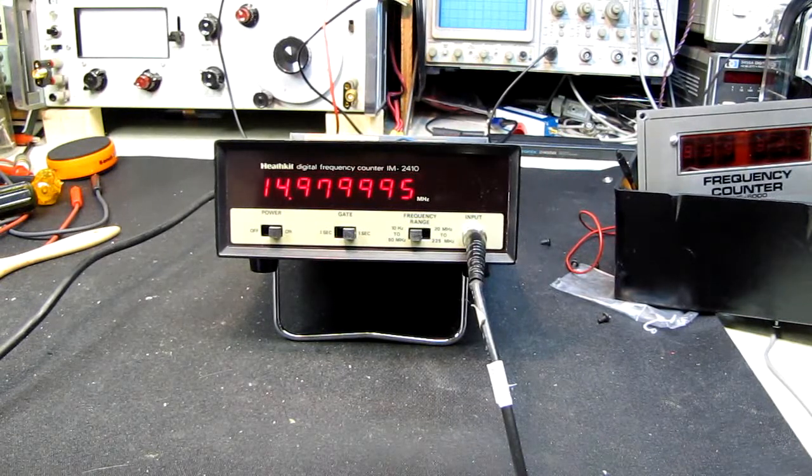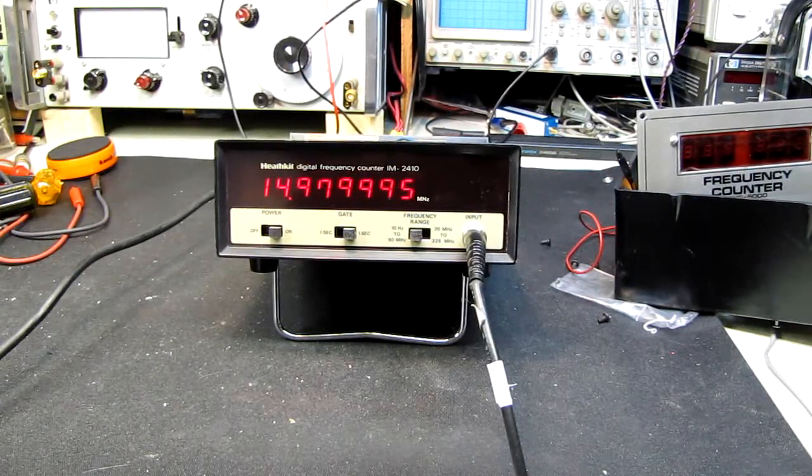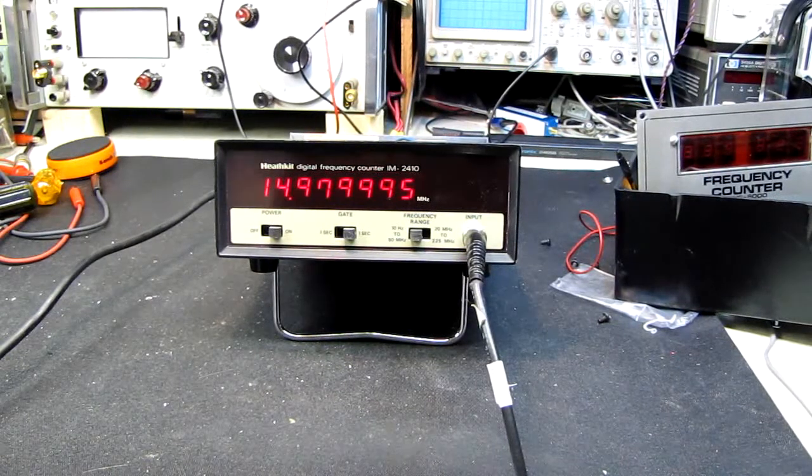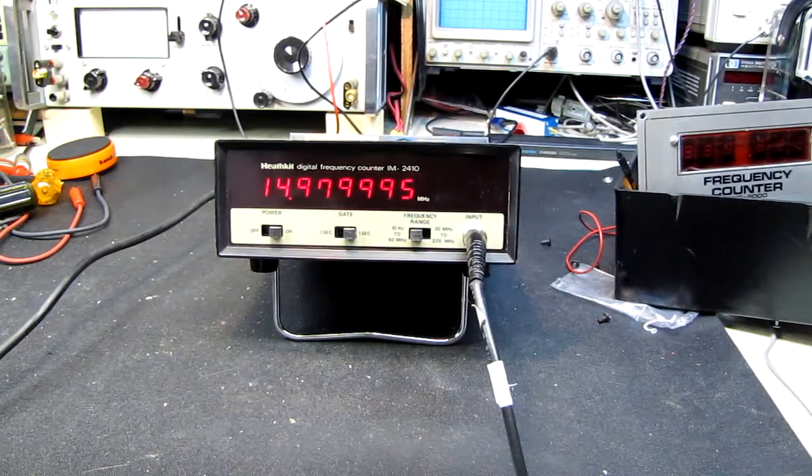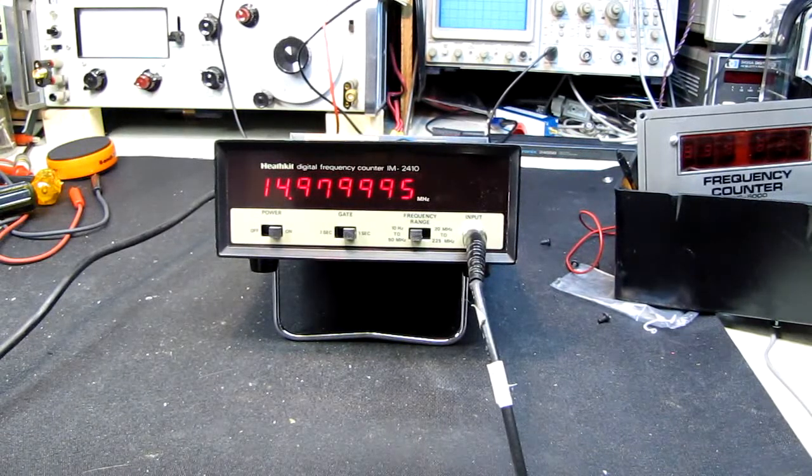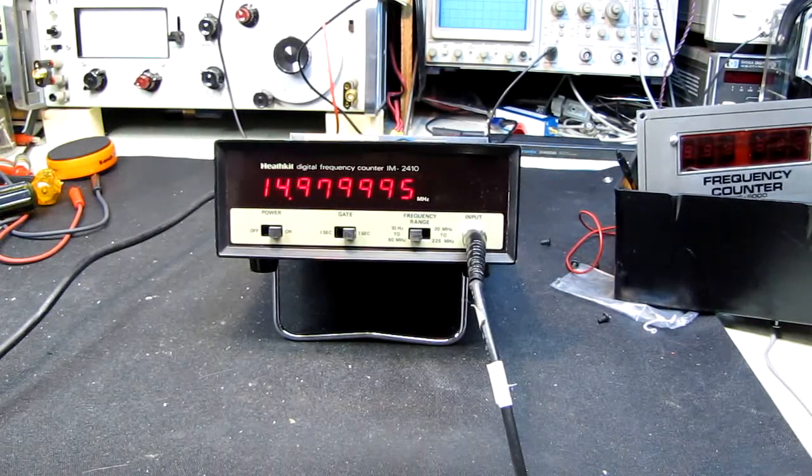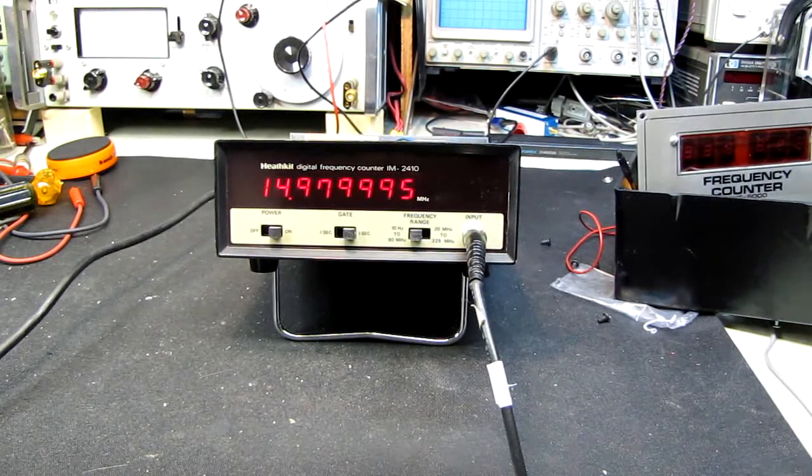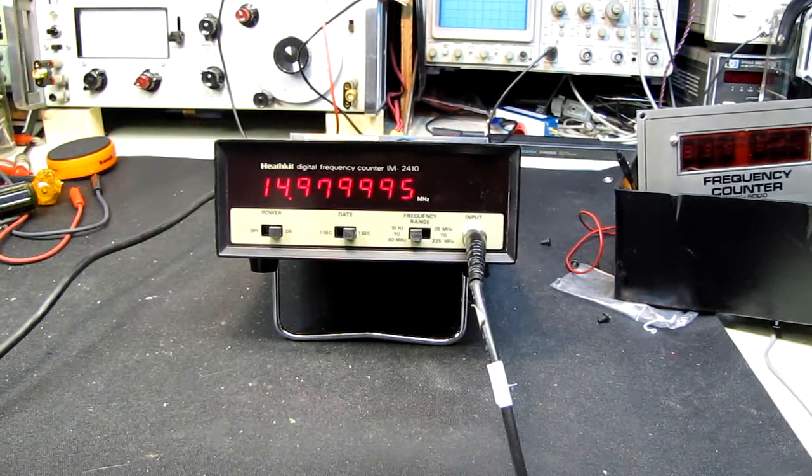And I have a GPS referenced oscillator. In other words, it's tied to the Bureau of Standards and is within a couple of millihertz. And that's what I'm using. Actually, it's going from my standard through my frequency generator, my Hewlett Packard signal generator set at a frequency of 15 megahertz.